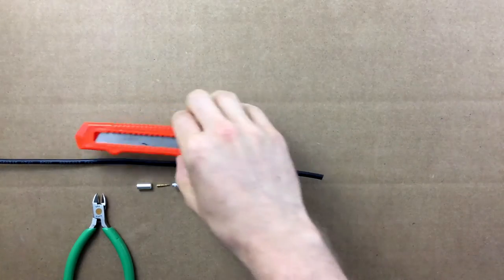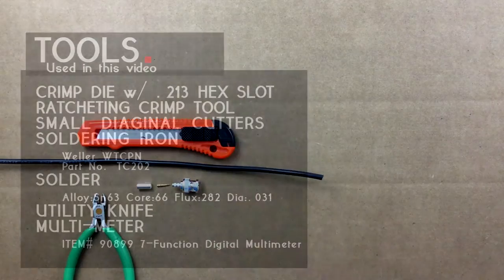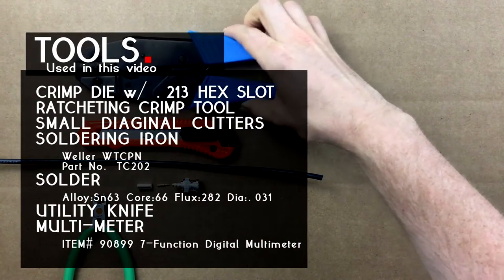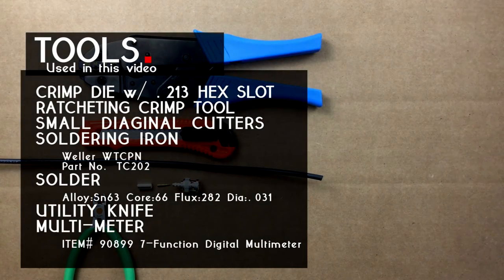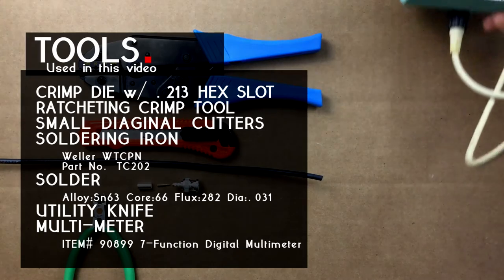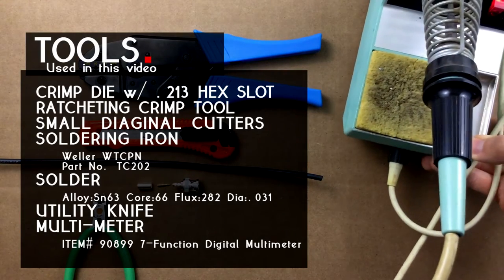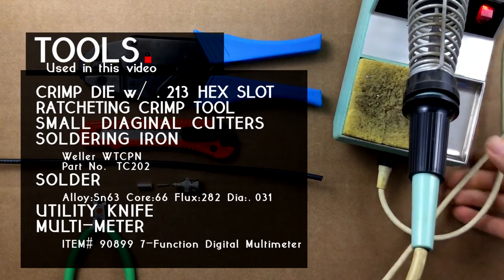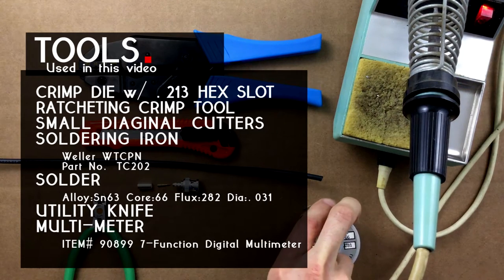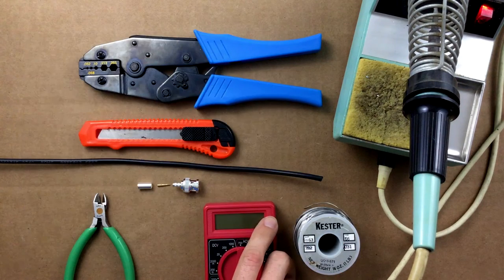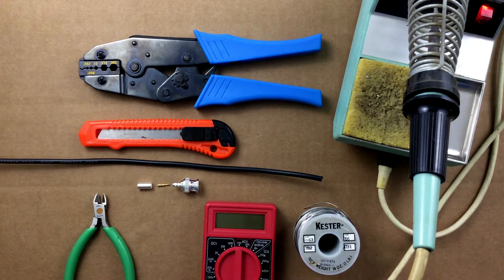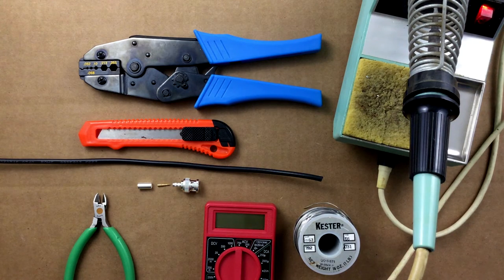Welcome to another Max Gain Systems installation series video. We will be installing a BNC male crimp-on connector onto RG58U or Belden 8240 coax. This coax has a single braided shield and a solid center conductor. The Max Gain Systems BNC male connector can easily be installed using standard stripping dimensions. Now let's get started with our installation.